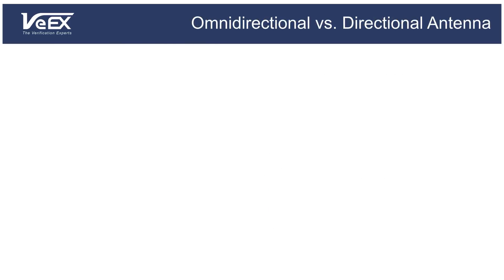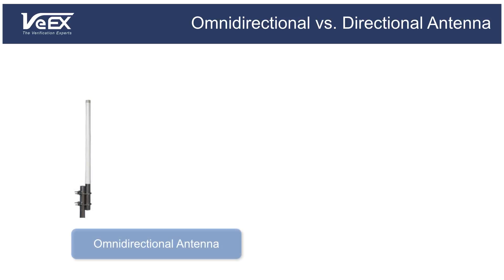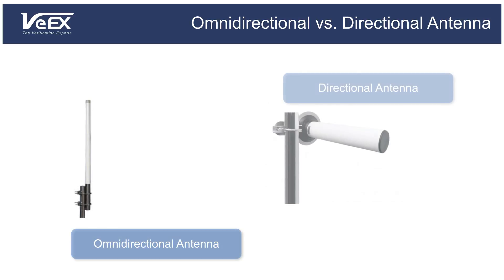When selecting an antenna, the type of application and the topology of the building or outdoor area need to be taken into account. There are two main categories of antennas: omni-directional and directional.